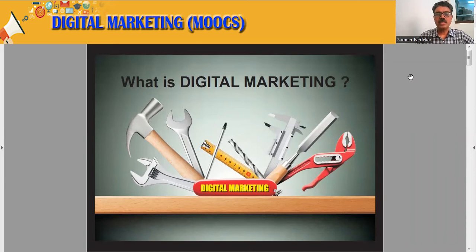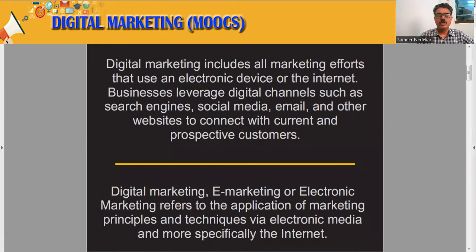Now let us try to understand what is digital marketing. Digital marketing includes all marketing efforts that use an electronic device or the internet. Businesses leverage digital channels such as search engines, social media, email, and other websites to connect with current and prospective customers. Digital marketing — also called e-marketing or electronic marketing — refers to the application of marketing principles and techniques via electronic media and, more specifically, the internet.